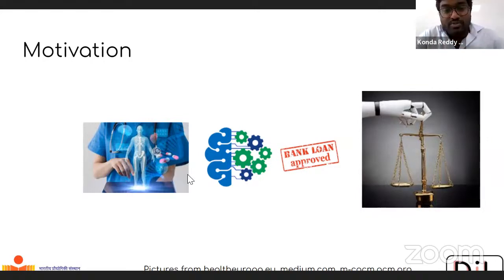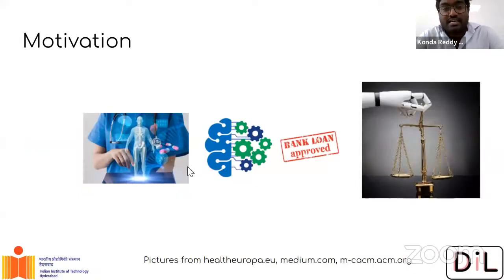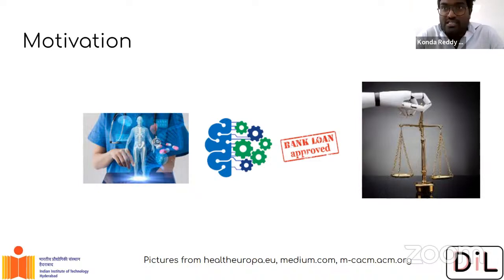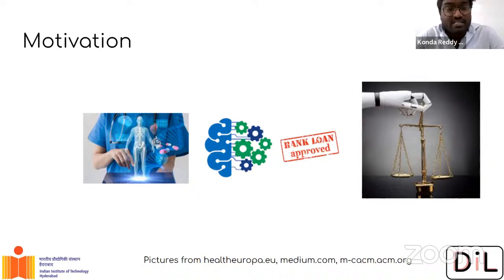We want to understand why the model has taken a certain decision. Is there a way a machine or algorithm can explain why it suggests something? If it is a human expert like a doctor, you can ask the rationale behind a decision to go for surgery or not. Because you can pose questions and discuss, human decisions are easily explainable. But in the case of algorithms, we want similar interpretability because these are very critical applications and we need to clearly understand those systems.